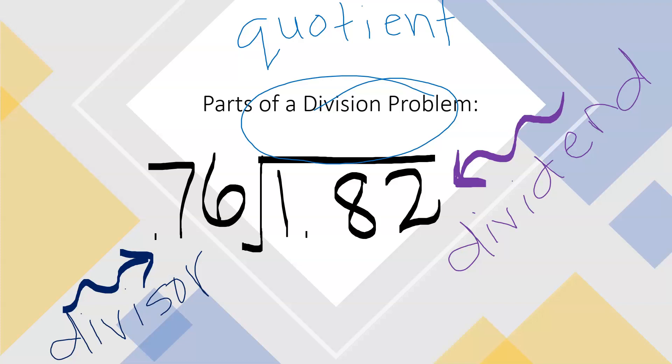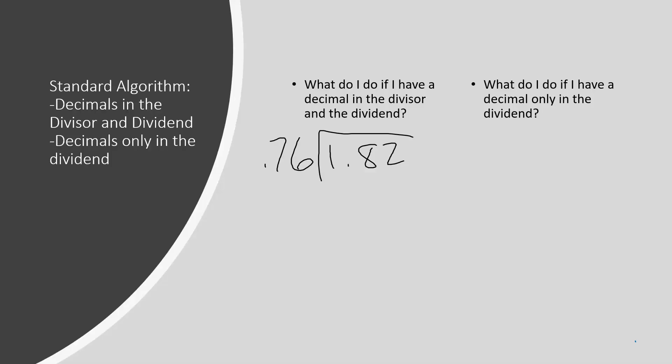Let's get started with standard algorithm. When doing standard algorithm, there are two types of problems that you will see. The first one is when you have a decimal in both the divisor and the dividend. Look at the problem: one and eighty-two hundredths divided by seventy-six hundredths.